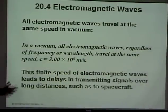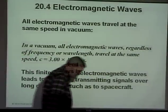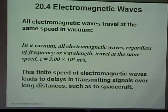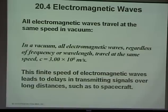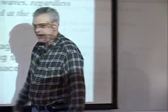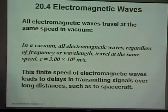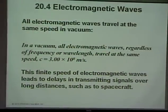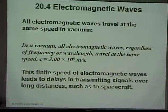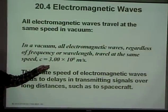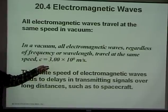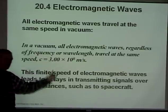This finite speed — nothing can go faster — causes delays transmitting signals over long distances, such as to spacecraft. Sound is only about 330 meters per second, which is roughly a million times slower than light.